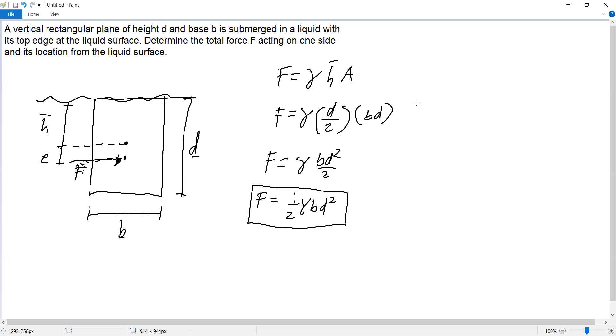So now the question is, determine its location from the liquid surface. From here, the liquid surface, down to here. This is yp. Let's label this yp. yp equals h bar plus e. How do we get e? By geometry, if the height is D and it's right at the top, it's just triangular.